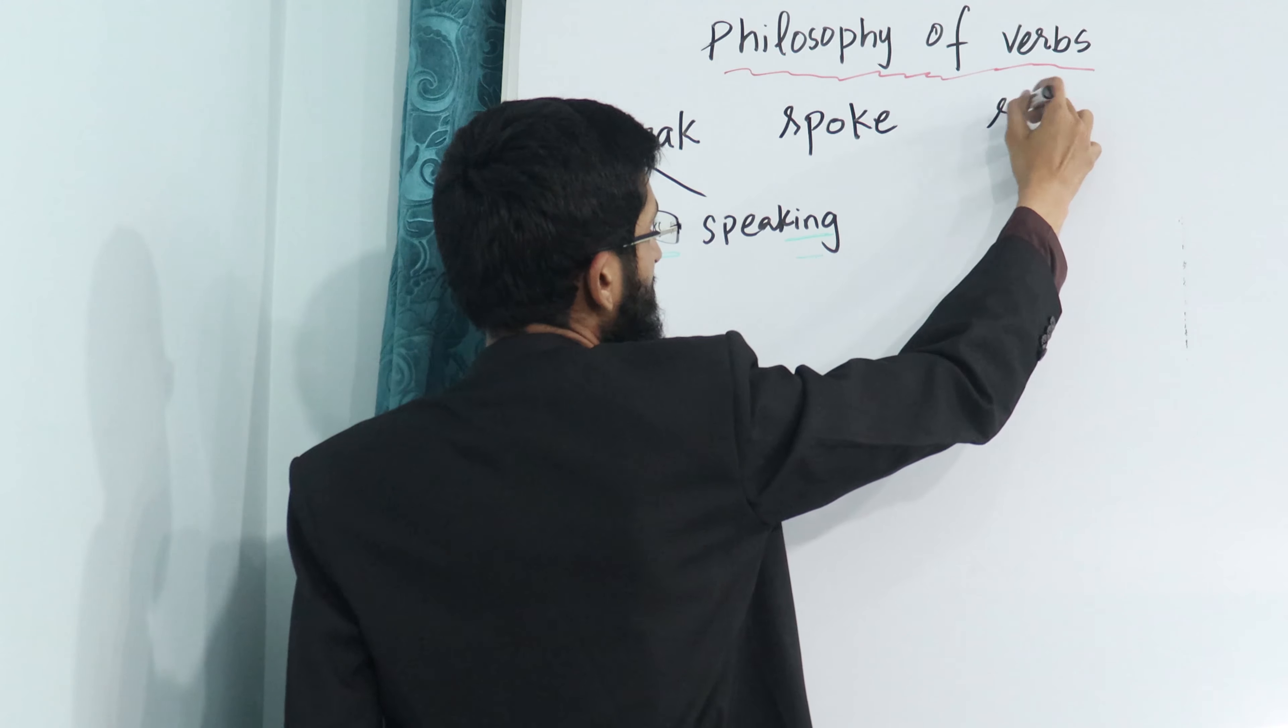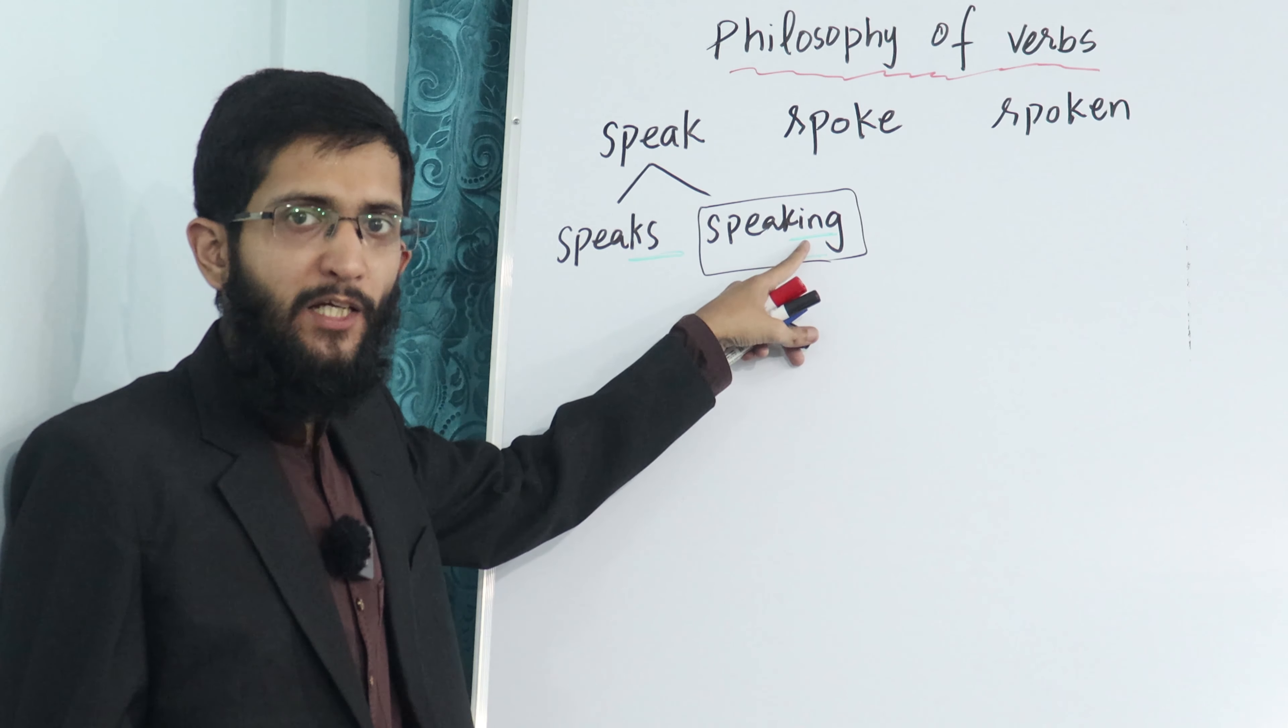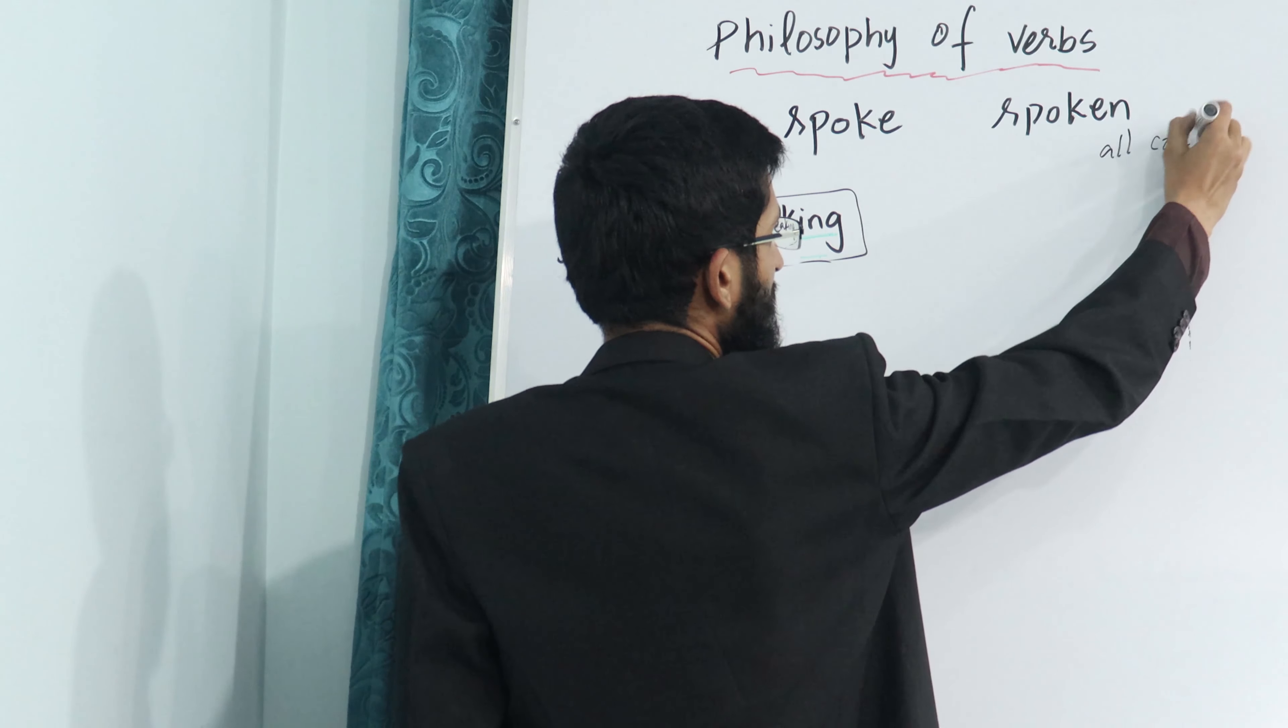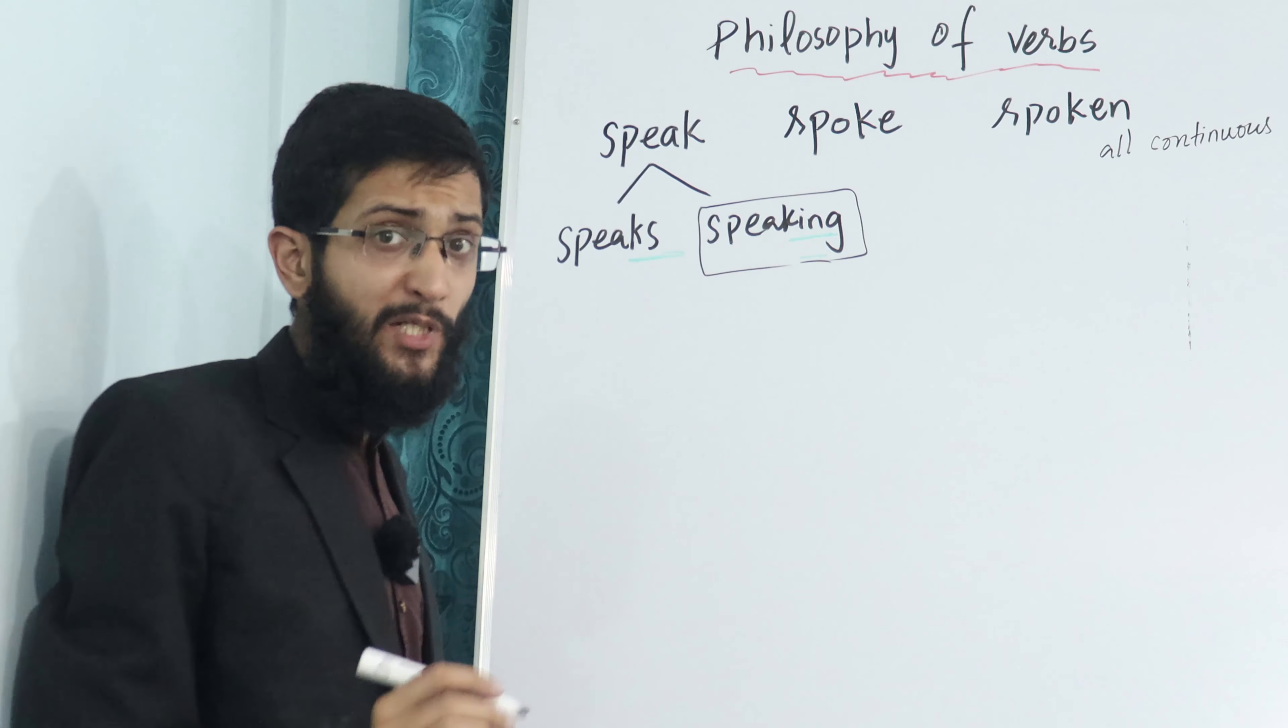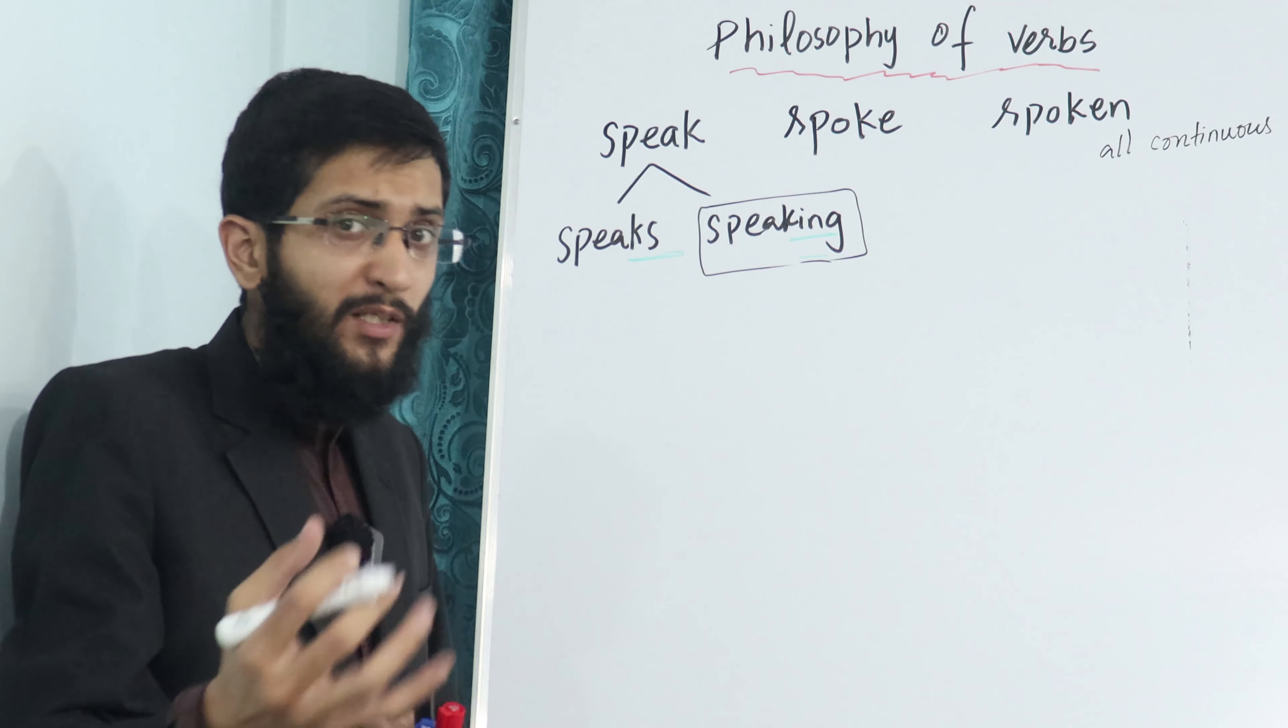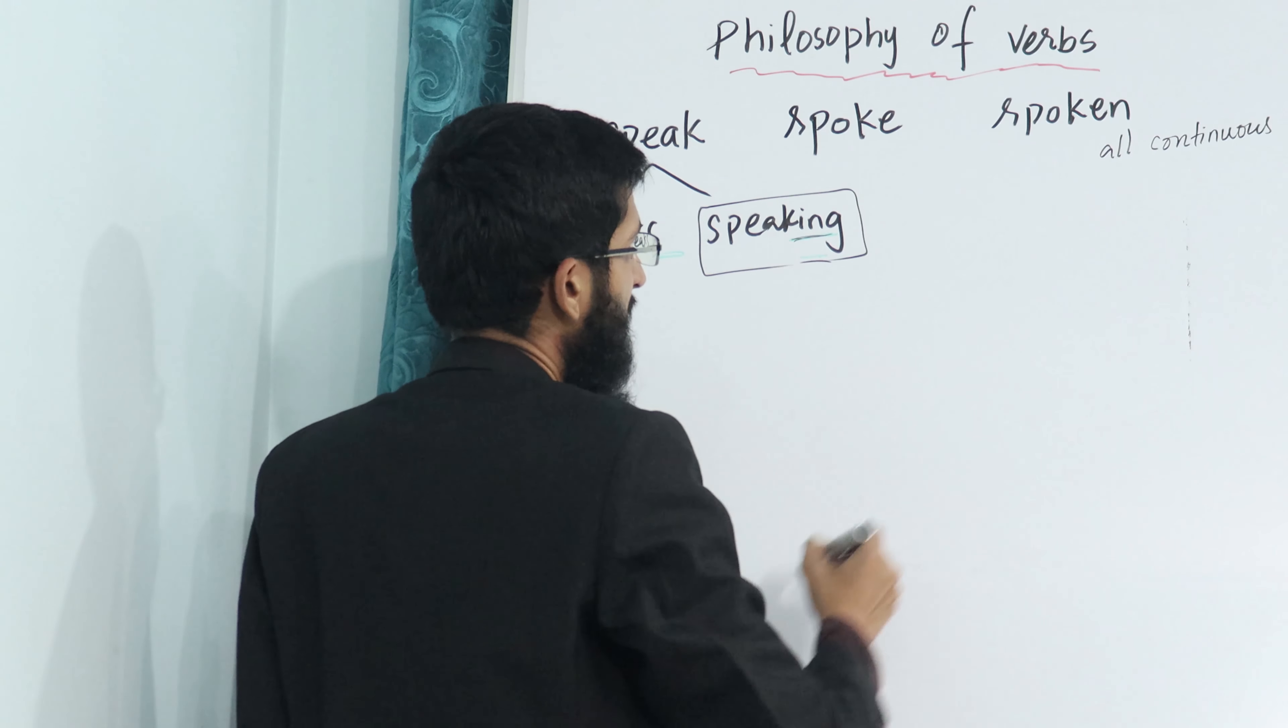Let's understand 'speaking' first. Whenever you see a first form with an ending -ing, use them in all continuous tenses. All continuous tenses means the action is continuous, you are doing something, you are in the middle of action. For example, right now I'm talking to you, I'm speaking to you, I'm writing on the board. You are watching my lecture, you are listening to me. This shows continuity.